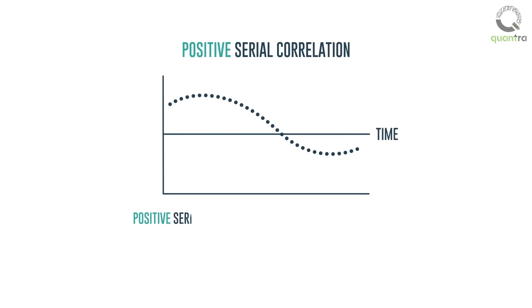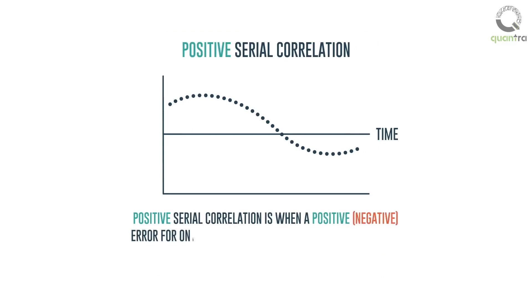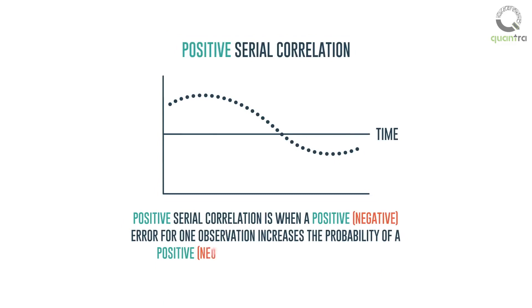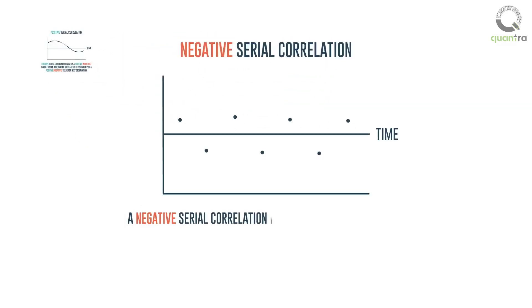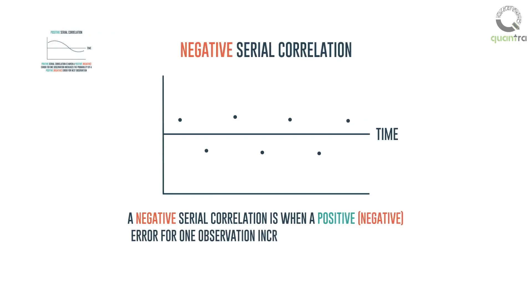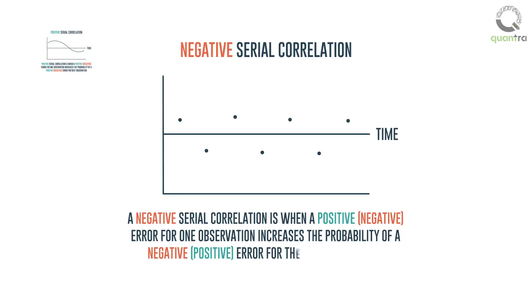Positive serial correlation is when a positive error for one observation increases the probability of a positive error for the next observation. A negative serial correlation is when a positive error for one observation increases the probability of a negative error for the next observation.